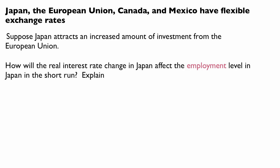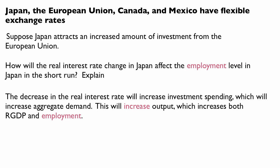How will the real interest rate change in Japan affect the employment level in Japan in the short run? The decrease in the real interest rate will increase investment spending, which will increase aggregate demand. This will increase output, which increases both real GDP and employment.